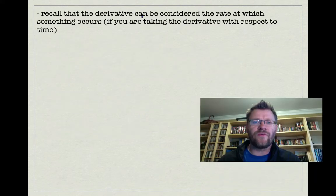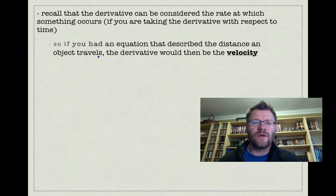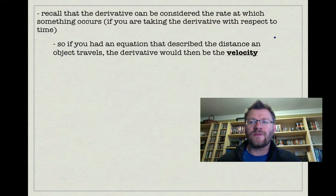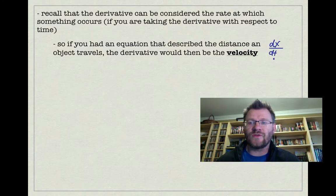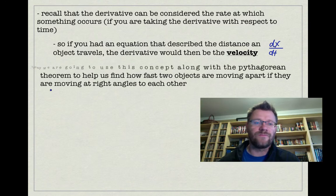Recall that the derivative can be considered as the rate at which something occurs if you're taking the derivative with respect to time. So if you had an equation that described the distance an object travels, then the derivative would be the velocity. If the distance is x, then dx/dt would be the change in x over the change in time, which would be the velocity.